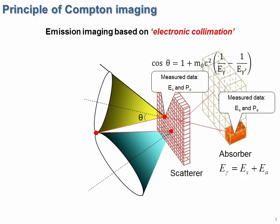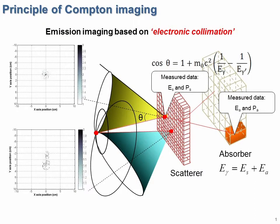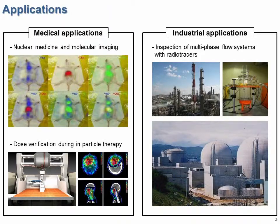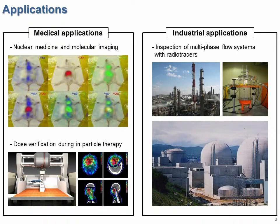By overlapping these conical surfaces, we can determine the location of radiation sources. Compton Imaging Devices can be used in many different fields, such as to monitor the dose distribution in hadron therapy, to visualize radiation sources in nuclear facility decontamination, or to image fluid flow in large pipes.